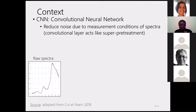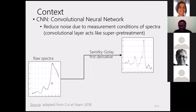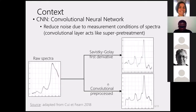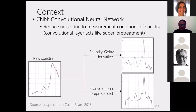One deep learning method is the convolutional neural network. Its particularity is that it acts like a super pre-treatment. As we can see here, we have the raw spectra. When we apply the Savitzky-Golay derivative pre-treatment, we see how it transforms the spectra. When we also apply convolutional pre-processing, it produces a similar transformation, demonstrating the performance of CNN to act as a super pre-treatment.